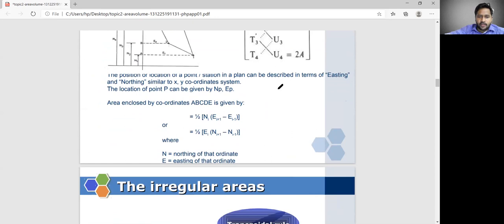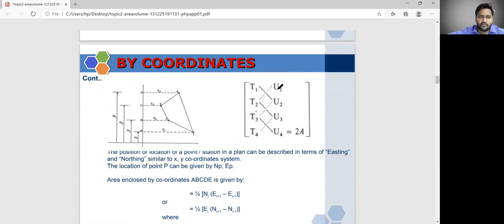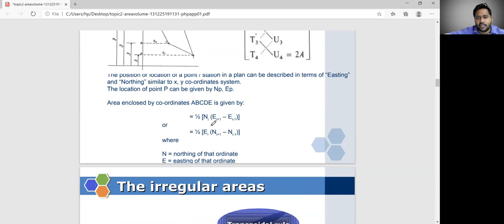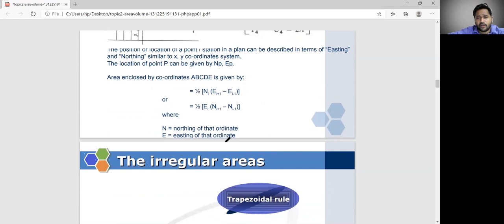By coordinating, by coordinating method also, we can solve these. We can calculate the volume of that particular area. The formula half into n_i into e_{i-1} minus like this. We need to calculate. North coordinate and e will be the east coordinate.